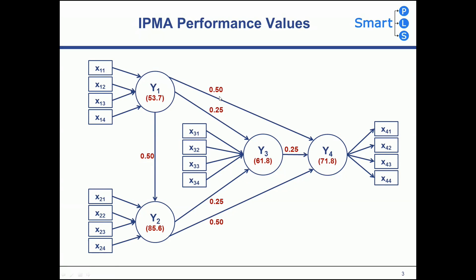While the path coefficients represent the relative importance, the IPMA now adds performance values for every latent variable in the structural model. These performance values are the average value of the latent variable scores on a scale from 0 to 100. The closer the score to 100, the higher the performance of the latent variable.